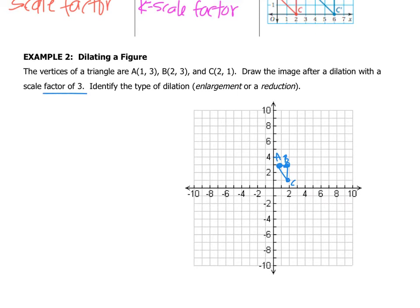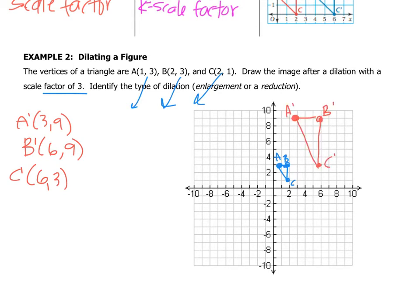They want us to do a scale factor of three. So I'm going to take each of my coordinates and multiply everything by three. So A prime is going to be at 3, 9. And I got that by taking 1, 3 and multiplying each of those numbers by 3. B prime is going to be at 6, 9 because I multiplied the coordinates by 3. And then C prime will be at 6, 3. So now let's plot that. Whoa, that just got super huge, which makes it an enlargement.